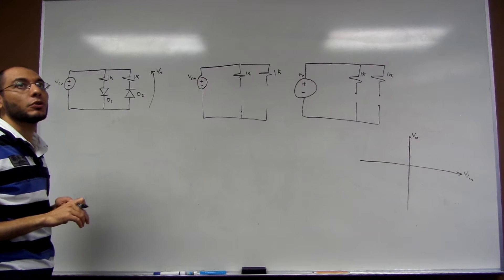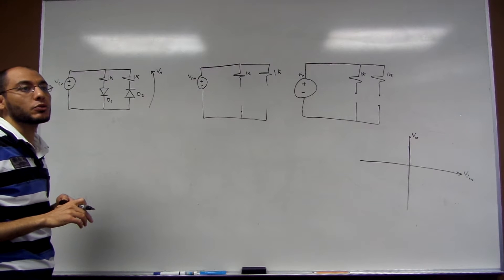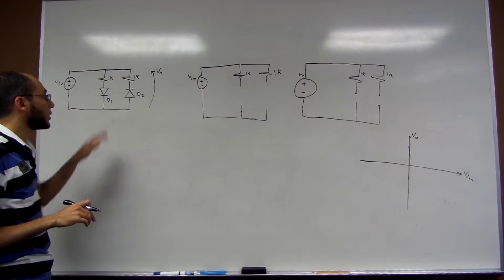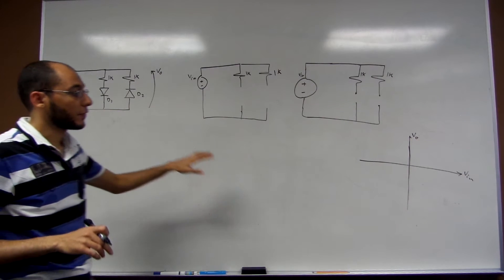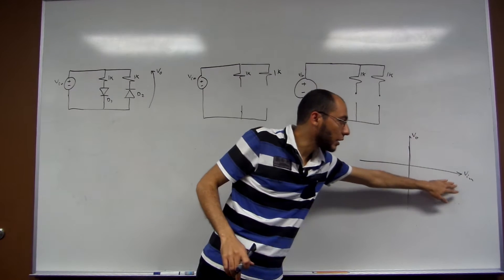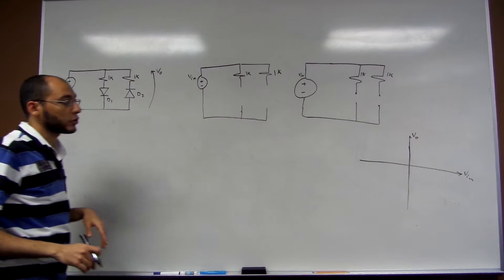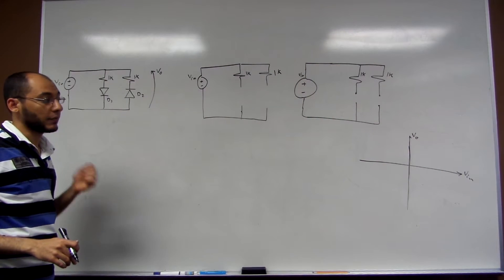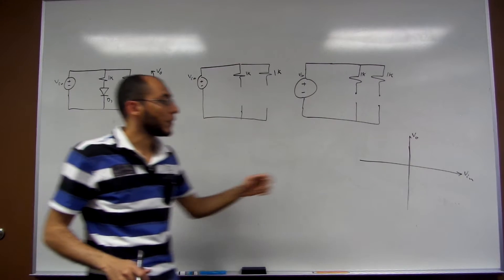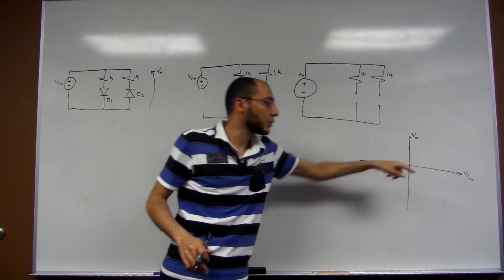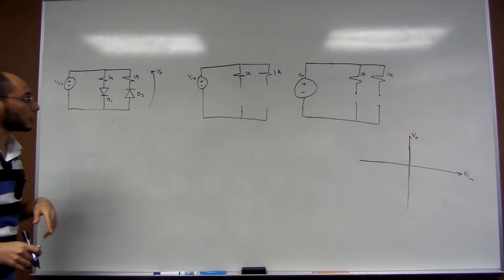Hello everyone. In this video I'm going to show you how to solve a problem with diodes and how to draw a graph between an output voltage and an input voltage. We're sweeping the input voltage from negative infinity to infinity to find the value of the output voltage in terms of the input voltage.